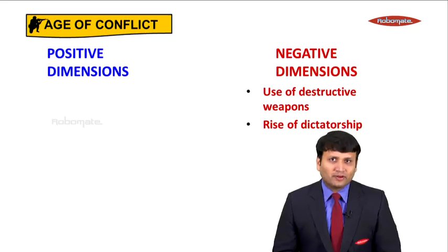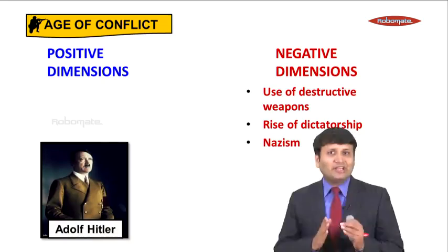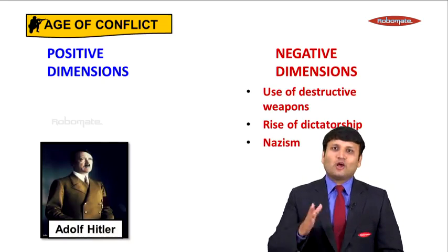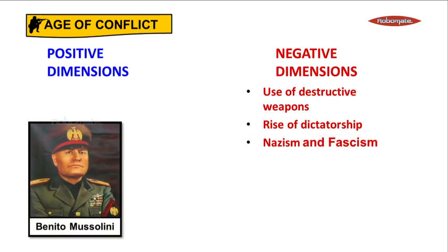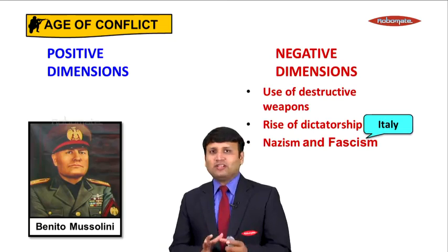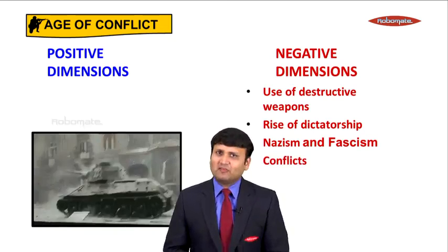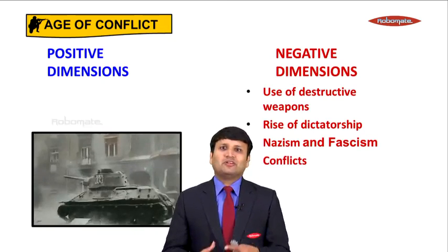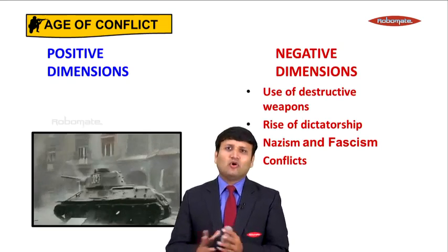Nazism was an ideology founded by the Nazi Party led by Adolf Hitler in Germany. Similarly, Fascism was an ideology of the Fascist Party started by Benito Mussolini in Italy. Dictators came up across the world — Germany saw dictatorship, Italy saw dictatorship. All these dictatorships eventually led to a lot of conflicts: lives were destroyed, properties were destroyed, and there was a whole loss to the entire world.